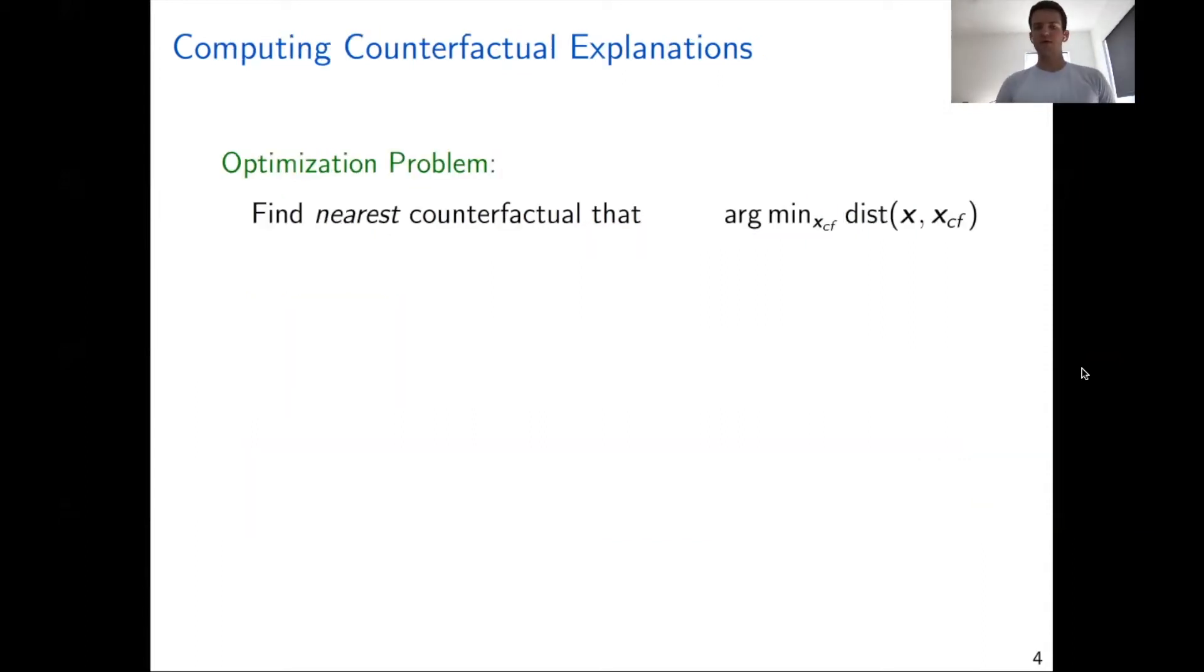So how do we compute counterfactual explanations? The problem can be defined fairly straightforwardly as an optimization problem. The goal is to find the nearest counterfactual, which I denote by XCF, that is as close as possible to the original instance X. So we are minimizing some kind of distance function subject to the fact that the classifier returns the desired outcome, and we want that the counterfactuals are realistic.